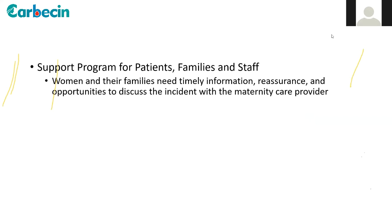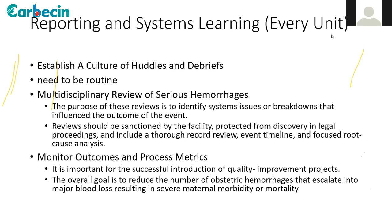Regarding consent for compression sutures: if the patient is known high risk, take anticipatory consent and explain. If unanticipated on the table, talk to relatives. Reporting and system learning: establish a culture of huddles and debriefs — call it a 'just culture,' not an inquiry. Routine multidisciplinary review of serious hemorrhages should identify system issues or breakdowns, be protected from legal proceedings, include thorough record review, timeline, and root cause analysis. Monitor outcome and process metrics — the overall goal is to reduce escalation of obstetric hemorrhage into major blood loss causing severe morbidity and mortality.